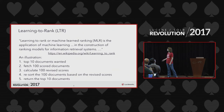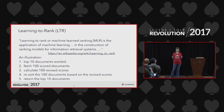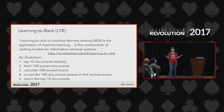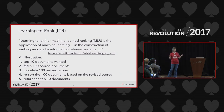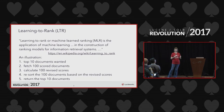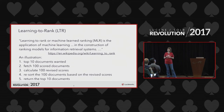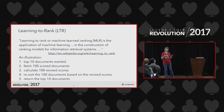Learning to rank for Solr essentially means: if our users want ten documents returned to them, we fetch more — say a hundred documents — and then use machine learning to reorder those documents. We apply our machine learning model to reorder them, and then take once more the top ten. Simply put: fetch more, then prune back with machine learning. Fetch and prune — that's it.